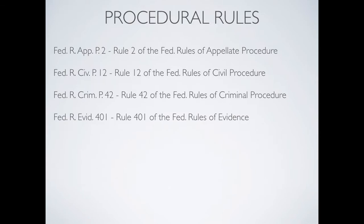What about all those procedural rules, like the rules of evidence or the rules of criminal procedure? This slide shows you how to do that — this is how the federal rules are cited. It's pretty simple. It's just understanding and learning what those abbreviations are. For example, for rule 2 of the Federal Rules of Appellate Procedure, you just have Fed. R. App. P. 2. You don't have to put the word 'rule' in there or anything. That is simply how you do it, same thing for the other ones on this slide.